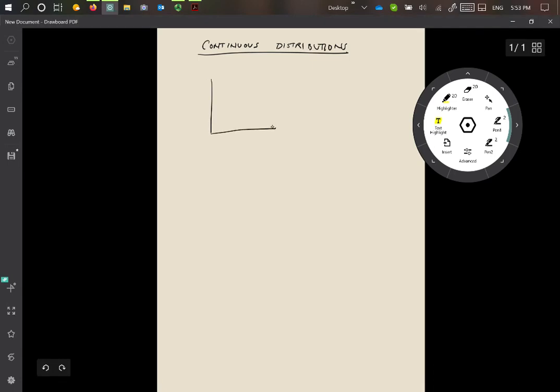Remember that the continuous distribution looks something like this. Here on the x-axis is the value of the random variable x, and the y-axis is the probability density function p of x, and it looks something like that.